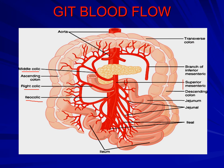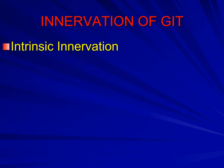During digestive activity the blood flow to the mucosal region is increased, while during motor activity the blood flow to the muscle layer of the wall is increased. It is thought that during increased activity of the GIT wall there is development of tissue hypoxia — decreased oxygenation of the gut — and this leads to the release of different vasodilator substances which can increase the blood flow by at least 50%.